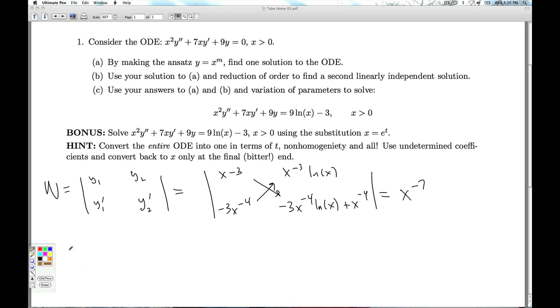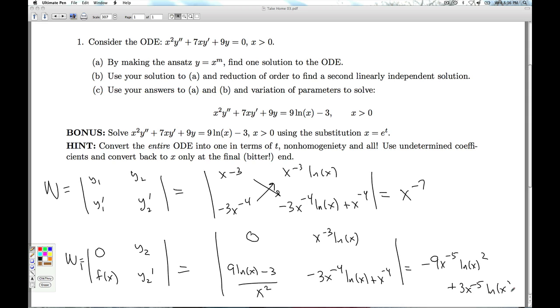For w1 now, we replace the column with y1 and y1 prime with zero in that special function f of x we have. And so we have zero, and we have the 9 natural log x minus 3 over x squared, and then we have the same column we had here before. And we get the ever delightful minus 9x to the minus fifth natural log of x squared plus 3x to the minus fifth natural log of x.